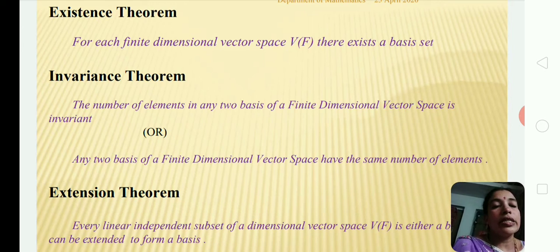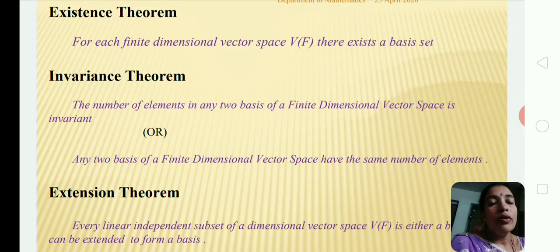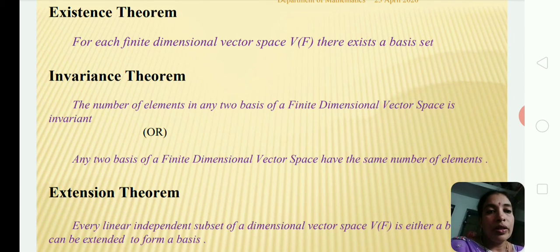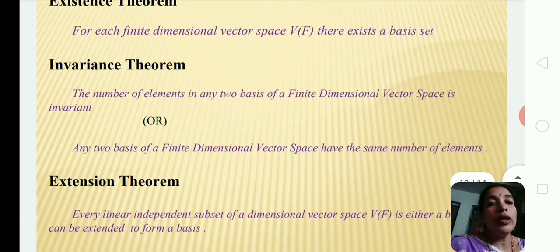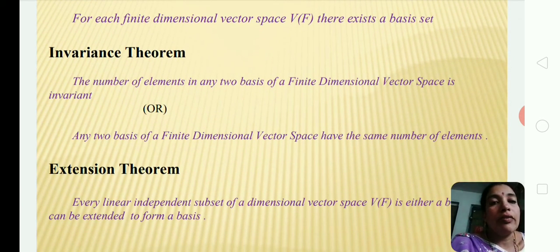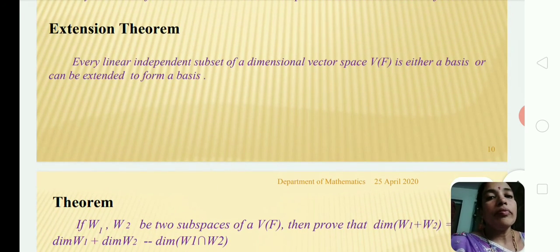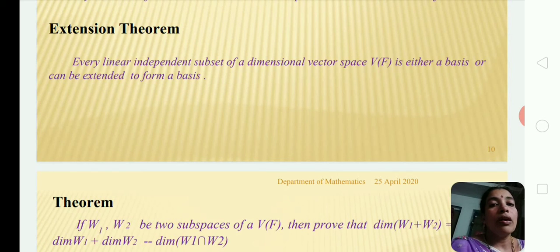The important theorems are: the existence theorem states that for each finite dimensional vector space V, there exists a basis set. The invariance theorem states that any two bases of a finite dimensional vector space have the same number of elements. The extension theorem states that every linearly independent subset of a finite dimensional vector space V over F is either a basis or can be extended to form a basis.